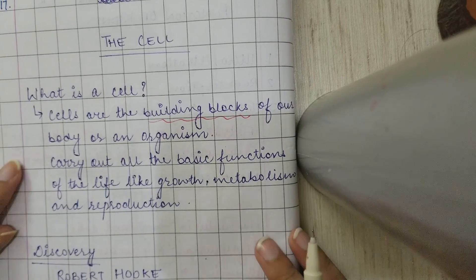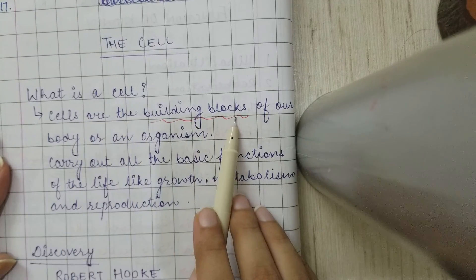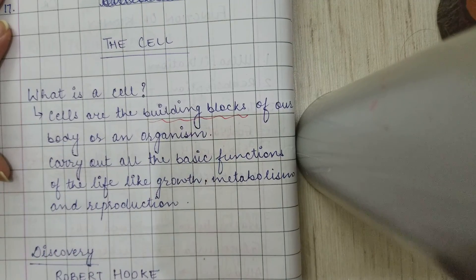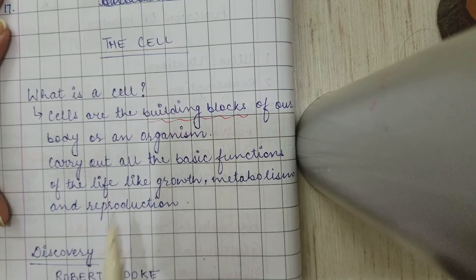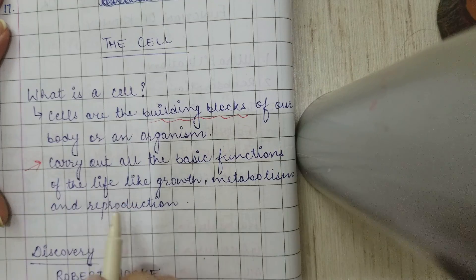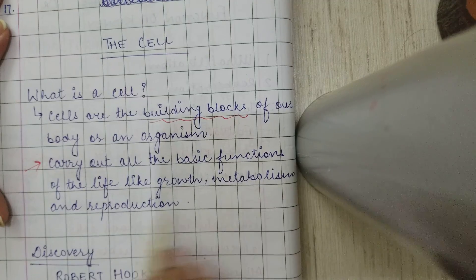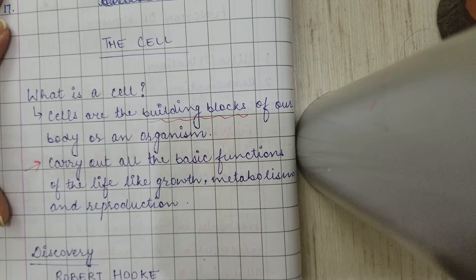Today we'll start with the chapter on the cell. Cells are the building blocks of a body or an organism — they act like bricks of a building. All organisms, even our own body, are made up of cells. The main function of cells is to carry out all the basic functions of life, like growth, metabolism, and reproduction. When an organism grows, there is a growth of cells taking place; the metabolism and digestion in the human body are all carried out with the help of cells.